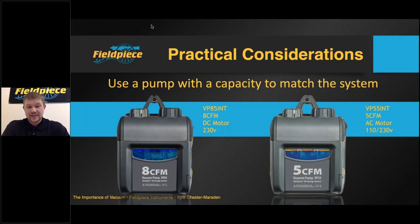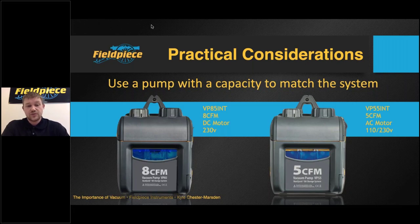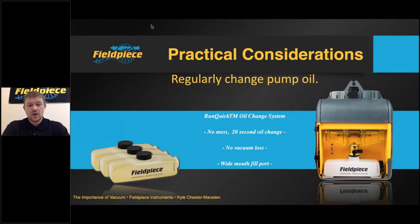Typically around four to five CFM for domestic and light commercial systems, and about six to eight CFM for larger commercial or industrial installations. At Field Piece we offer both an eight and a five CFM vacuum pump, with the five CFM model being dual voltage — both 110 volts and 230 volts — which allows the engineer to work on sites where 230 volts is prohibited, such as building sites or the marine industry.